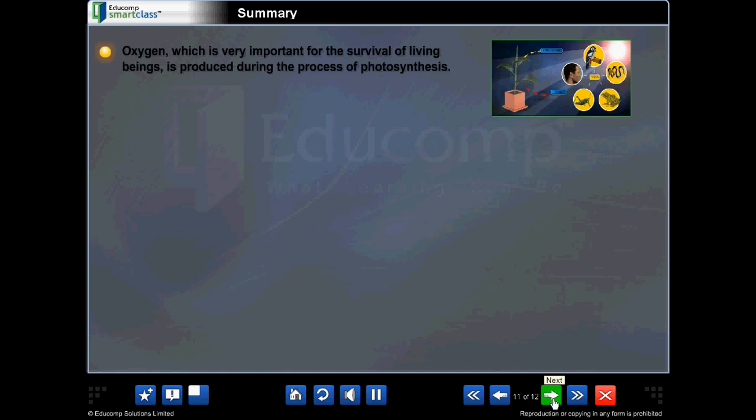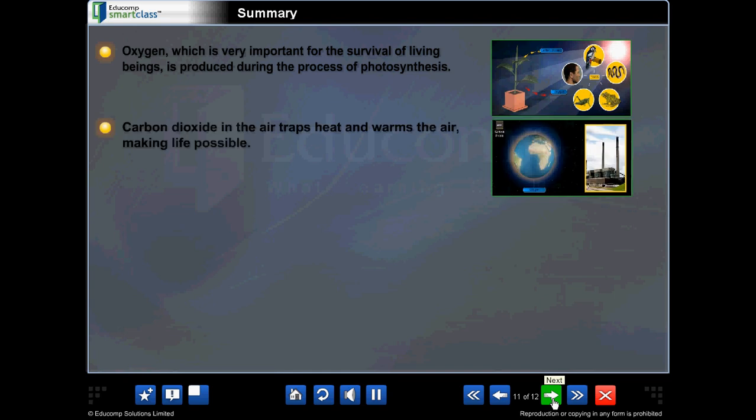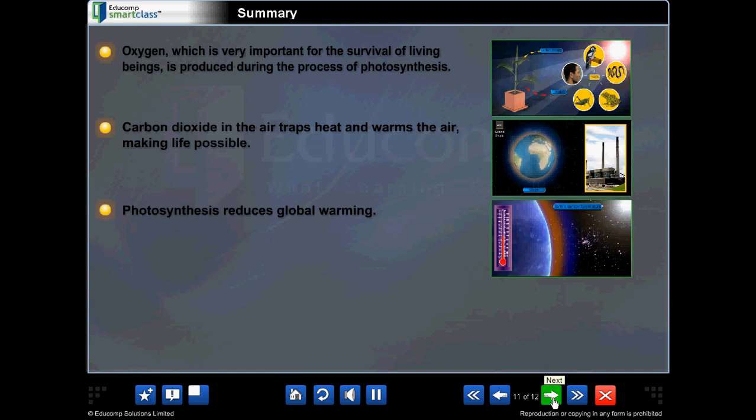Oxygen, which is very important to the survival of living beings, is produced during the process of photosynthesis. Carbon dioxide in the air traps heat and warms the air, making life possible. Photosynthesis reduces global warming.